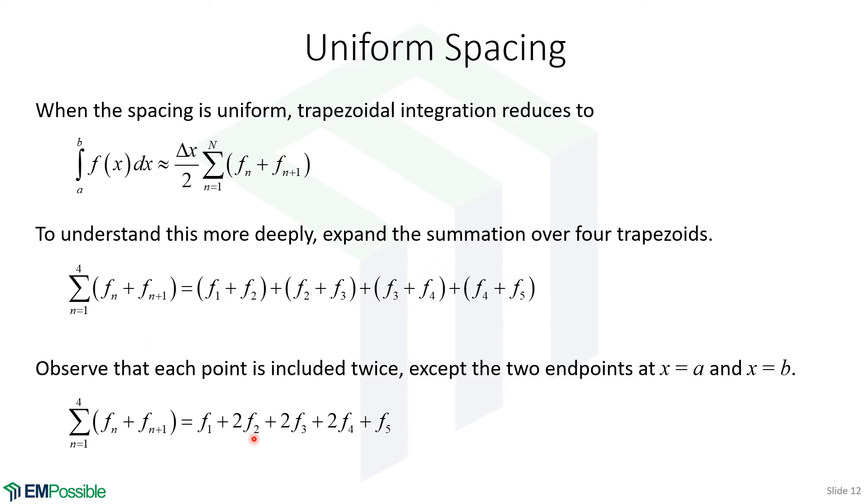So really, we're going to multiply all of the function values by 2 except the two endpoints. F1 and F5 are not multiplied by 2. So in practice, this is really what we're doing for trapezoidal integration in our computer code. We're really summing all of the function values, but multiplying all the interior points by two, but not the endpoints.